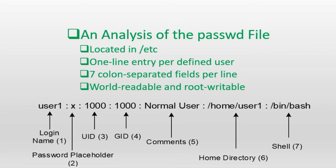Field number three stores a numeric identifier known as the user ID or UID. User ID zero is reserved and used for the root user account. UIDs between 1 and 999 are reserved for service accounts, and UIDs starting at 1000 to the default maximum of 60,000 are used for normal user accounts. Field number four holds a numeric identifier known as the group ID or GID.